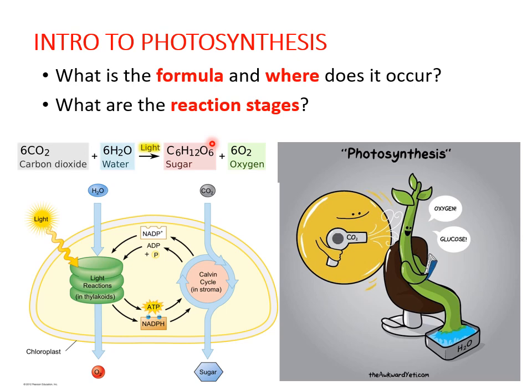Now when we think about where this is occurring, you're going to notice the chloroplasts over here. In later slides we will focus on the individual portions — exactly where certain stages are happening such as thylakoids or stroma — but for now the main emphasis is that photosynthesis is taking place in the chloroplasts, as opposed to the electron transport chain and respiration which occurs in the mitochondria.